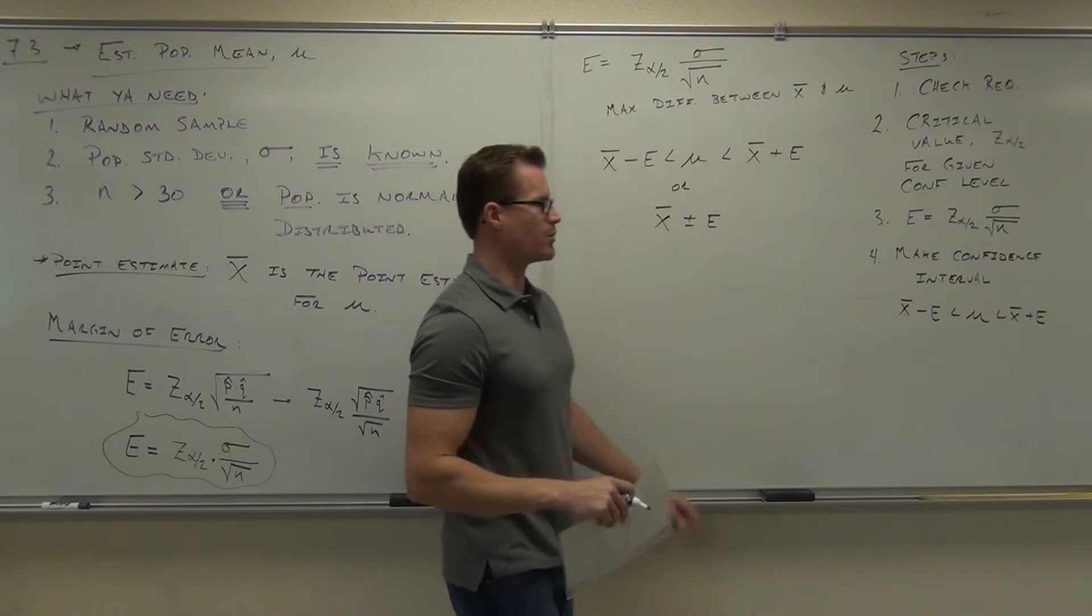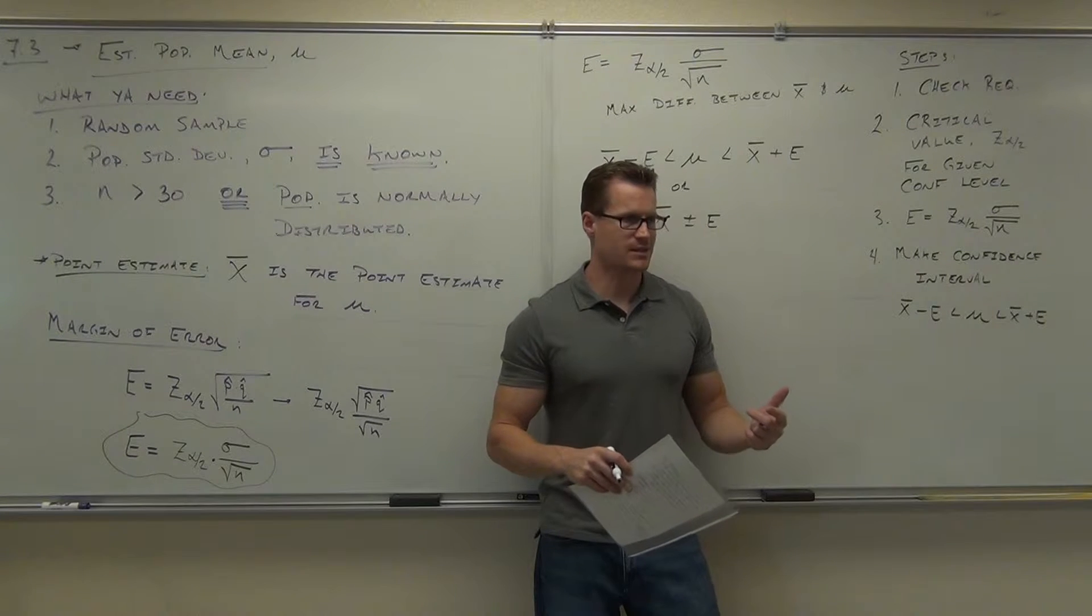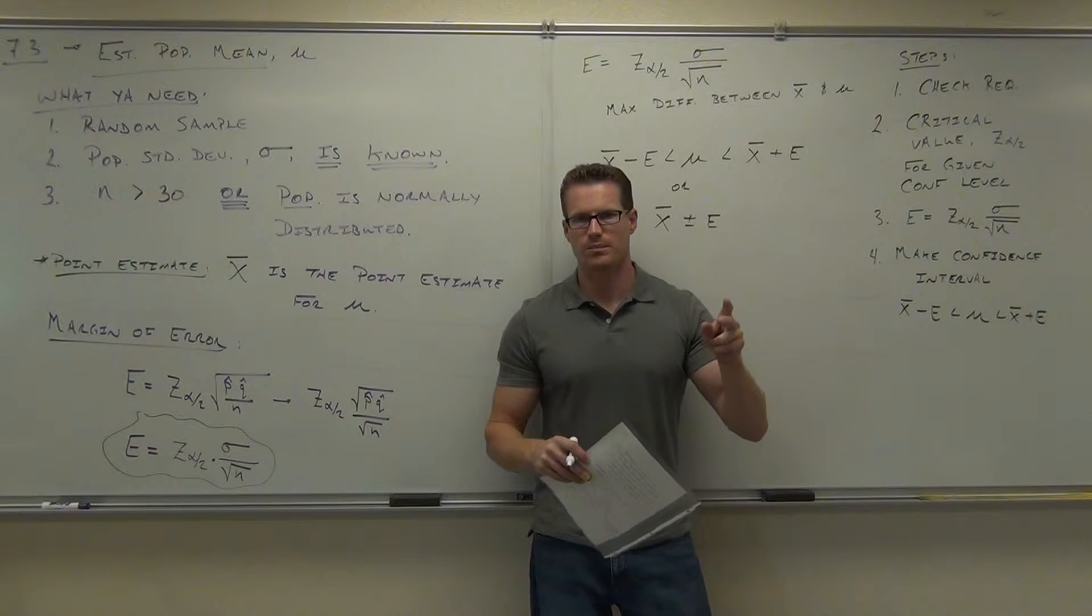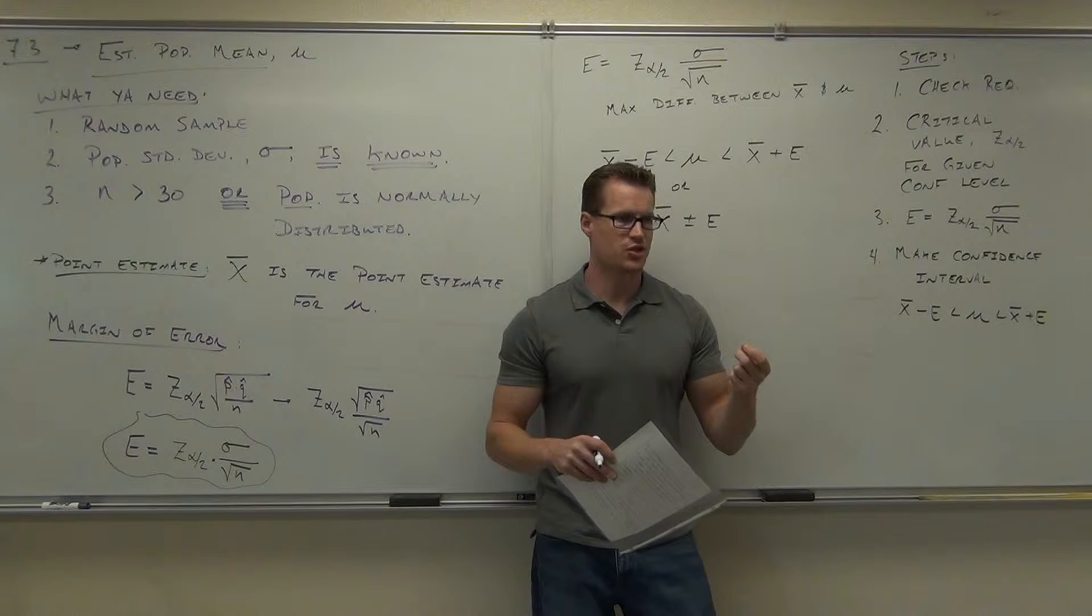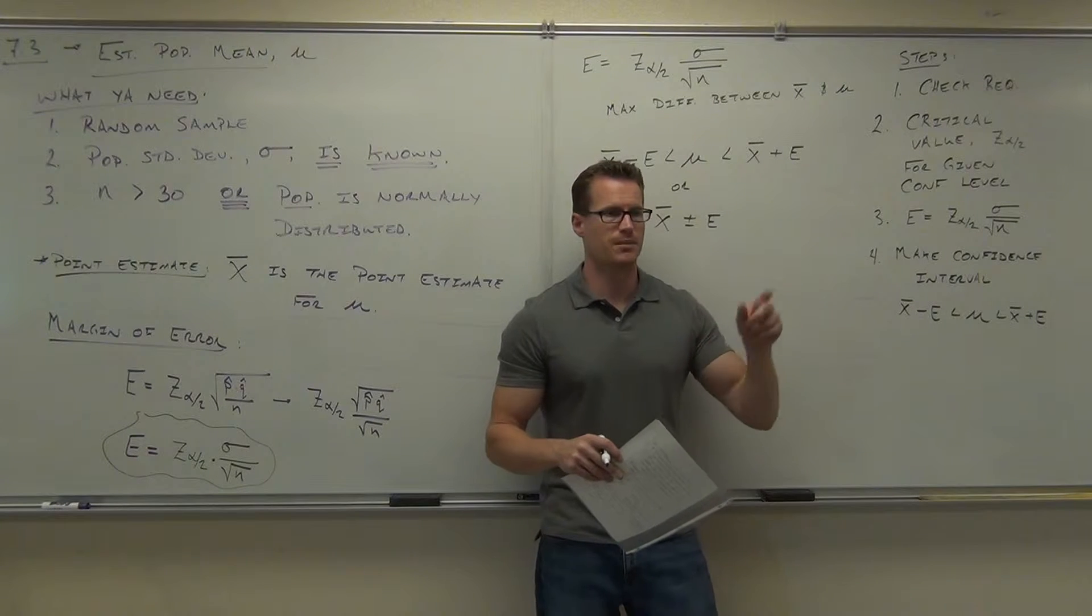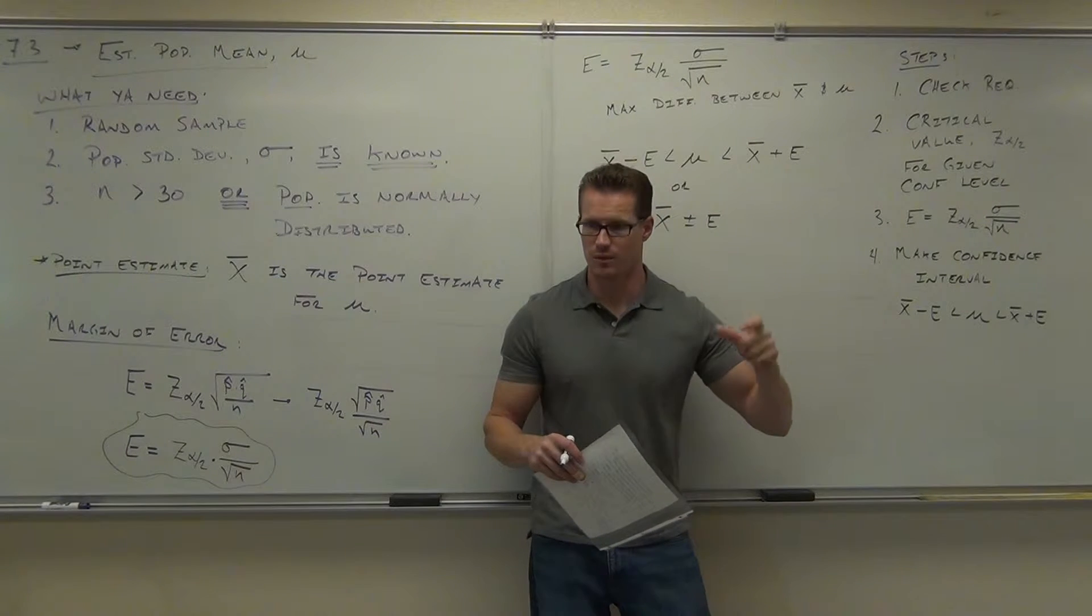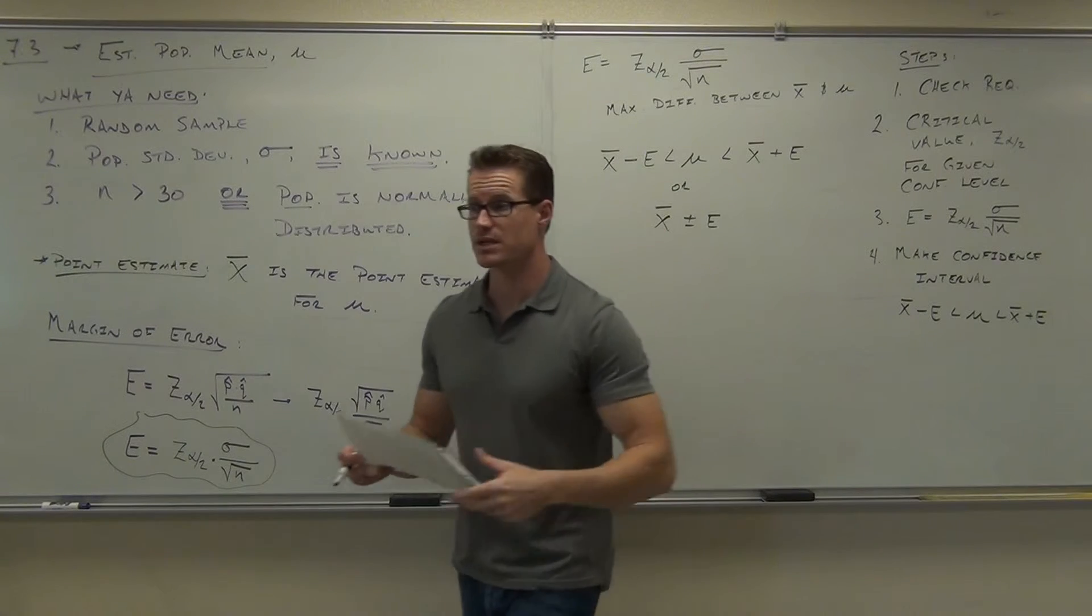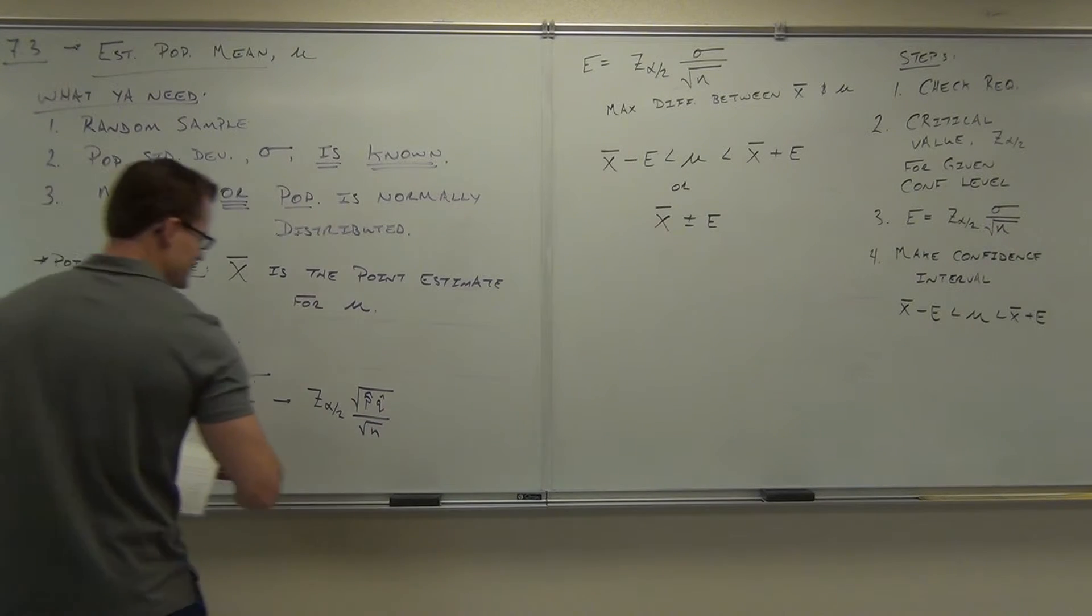Remember what the interpretation is of this thing, this confidence interval. Basically it says this and this is a quote. Remember I had you write down a quote a while back. I said quote I don't know what the exact value of the population mean is. Now we're talking about mean now. I don't know what the exact value of population mean is but I am blank percent confident, 90, 95, 99 percent confident that it will fall in this range. Does that make sense? That's what we've been having for the past couple weeks now.